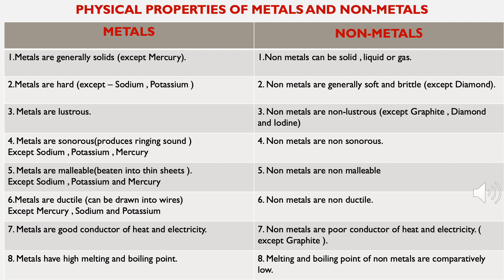Metals are good conductors of heat and electricity, but non-metals are poor conductors of heat and electricity, except graphite, which is a very good conductor of both. Metals have high melting and boiling points, while the melting and boiling points of non-metals are comparatively low.